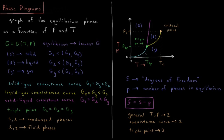Phase transitions occur at some point along one of these coexistence curves, where the Gibbs energy of the two phases is equal. We also have the liquid-gas coexistence curve — the boundary between the liquid phase and the gas phase — where the Gibbs energy of the liquid and gas are equal and both are below the Gibbs energy of the solid. We also have the solid-liquid coexistence curve, where the Gibbs energy of the solid and liquid are equal, both having a lower Gibbs energy than the gas.